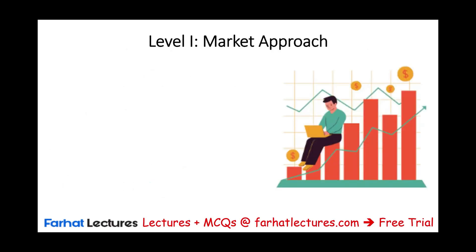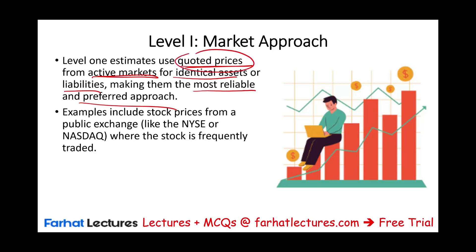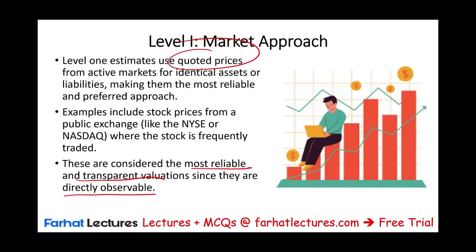Level one is the market approach. You estimate the fair market value of an item using quoted prices from active markets for identical assets or liabilities, making it the most reliable and preferred approach. If an asset has an active market — people are buying and selling at a quoted price — that's a directly observable price and the most transparent valuation. Examples include stocks like Apple, Microsoft, Amazon, and Walmart traded on active exchanges.